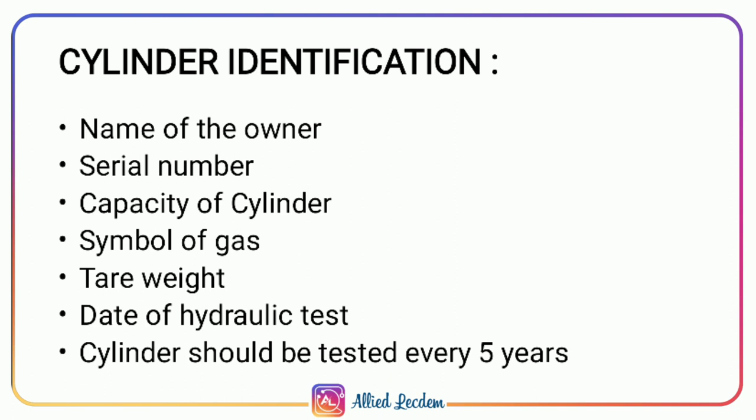While receiving a cylinder, we should check for the following: name of the owner, serial number, capacity of the cylinder, symbol of gas on the cylinder, tare weight (the weight of an empty cylinder without gas), and date of hydraulic test. Cylinders should be tested every 5 years.